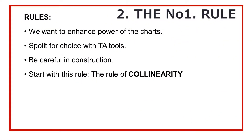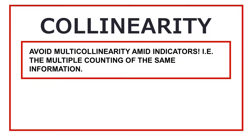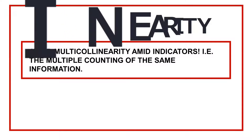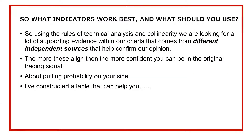We want to enhance the power of our charts the best we can, but we have to be really careful in construction. A key rule of technical analysis is called co-linearity. The rule of co-linearity simply states that you should avoid multi-co-linearity among indicators — i.e., the multiple counting of the same information. We're looking for tools and indicators that come from different sources but give us the same signals — that's where we get the strength from. If you put them all from the same input, like the RSI and MACD for example, then you're only fooling yourself. The signals you're getting are repetitive of the same thing, and you're probably destroying your strategy by doing so.